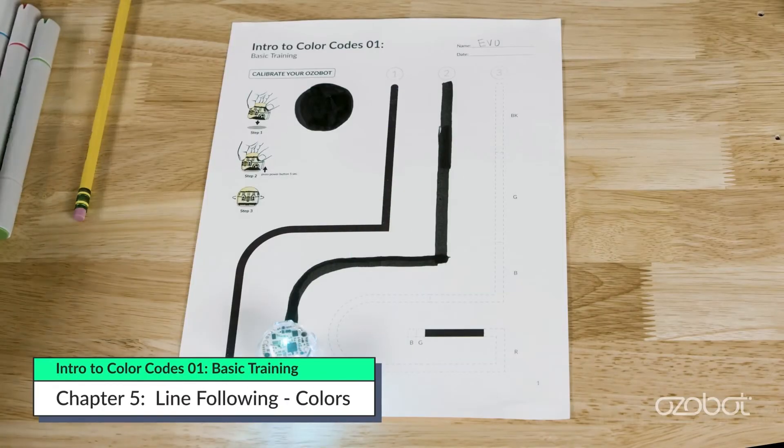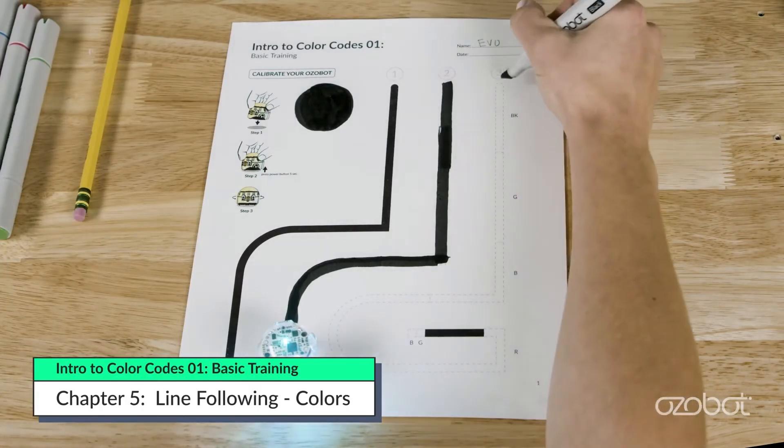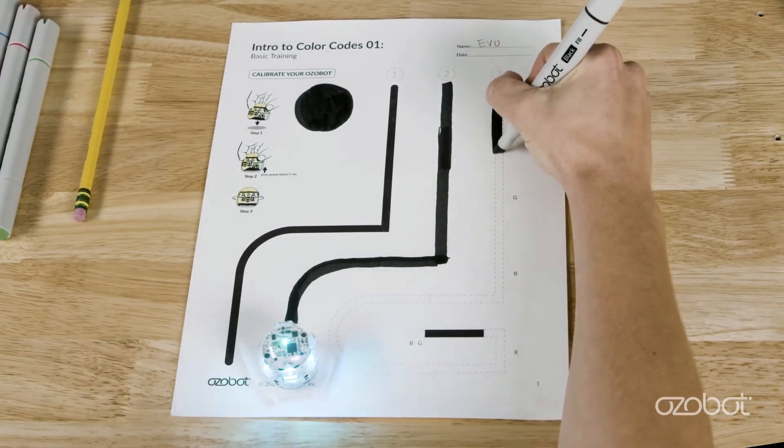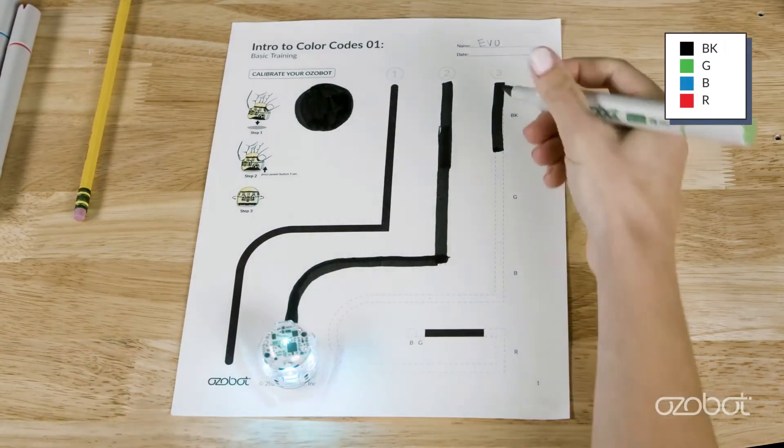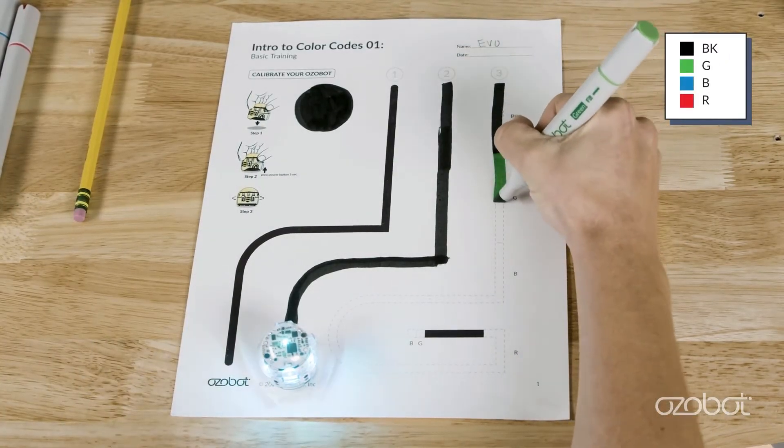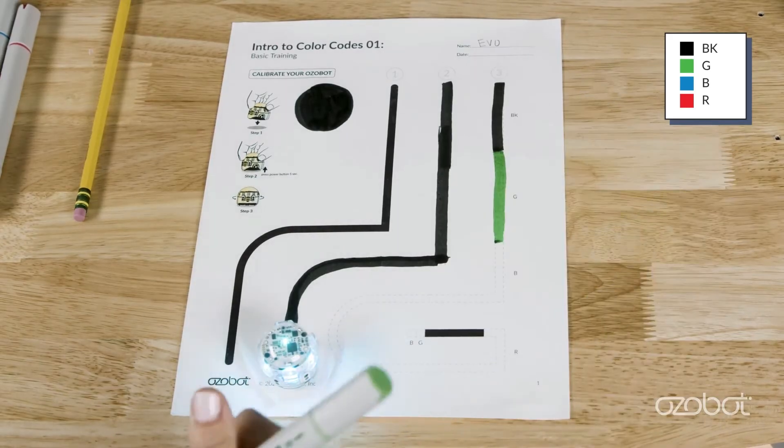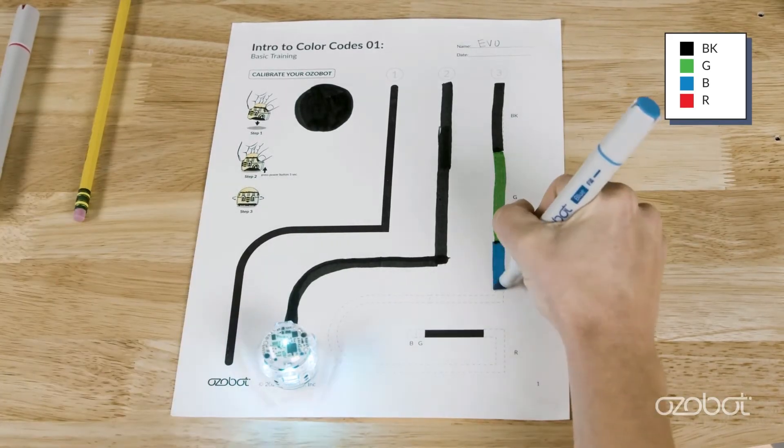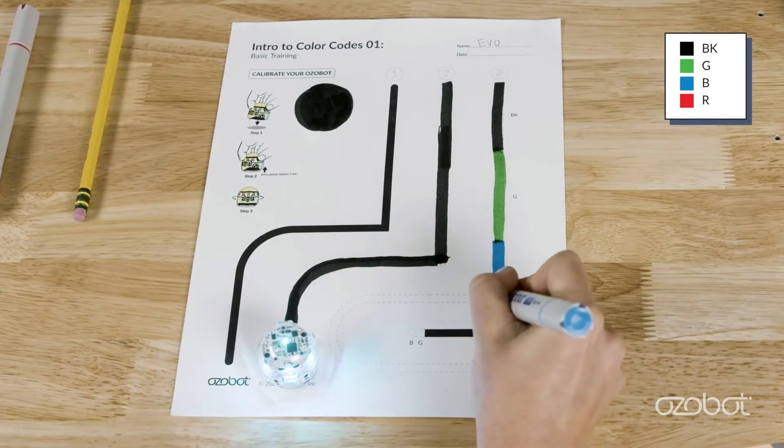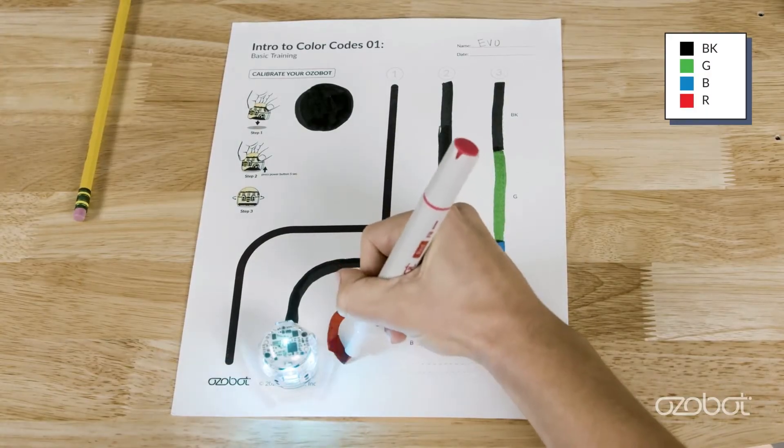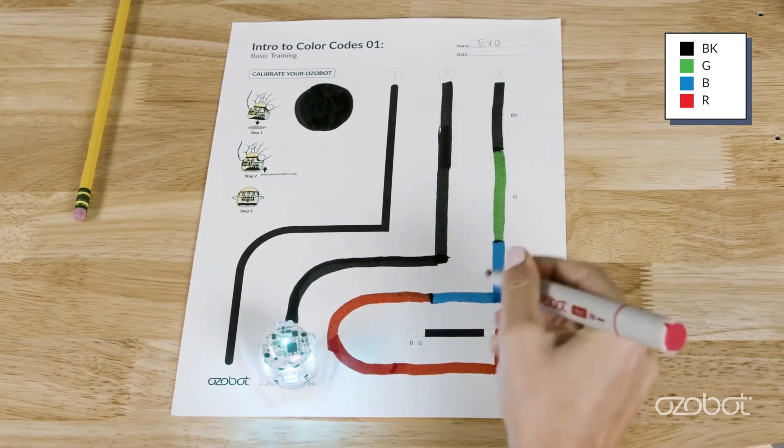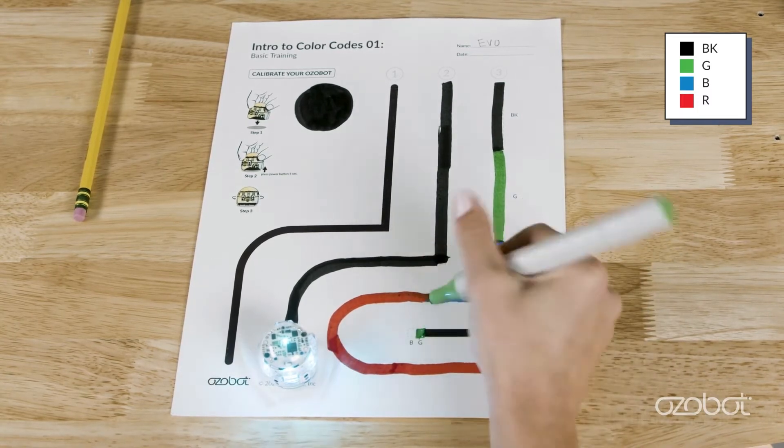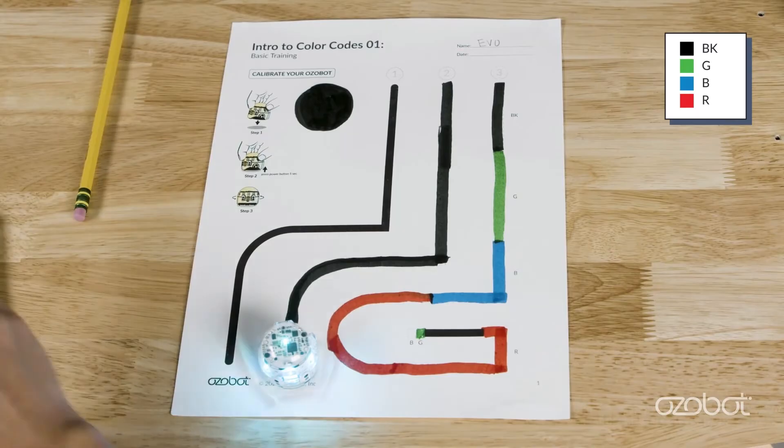Find start three and notice there are letters next to the segments of this line. Use black to fill in the segment labeled BK. Use green for the segment labeled G. For the B segment, use blue, and for the R segment, use red. Also, you'll notice two square blocks at the end of the line. One has a B for blue and one has a G for green.